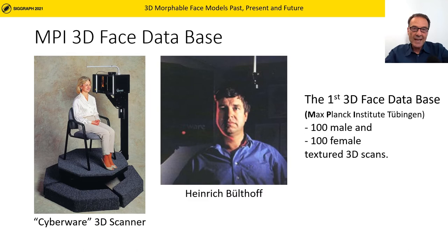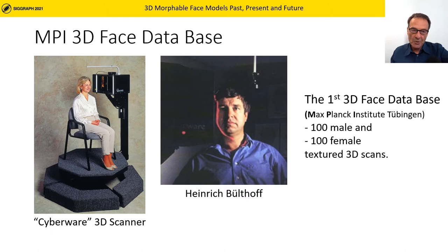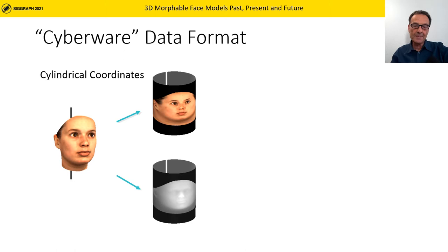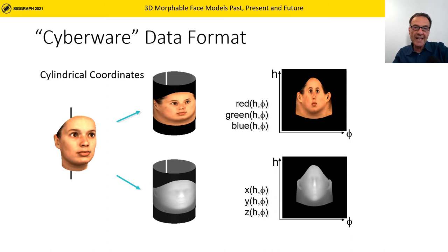Controlling for facial expressions, accessories, hair, and most importantly the illumination conditions is even today a major challenge. That is one of the reasons why this type of data is still not available at large scale. Besides the quality, the database offered a second very important advantage: the scanner delivers texture and geometry in cylindrical coordinates. Despite some shortcomings with occlusions in the chin and nose region, this representation was of tremendous advantage. The geometry and reflections in cylindrical coordinates were directly interpreted as a kind of 2D image.